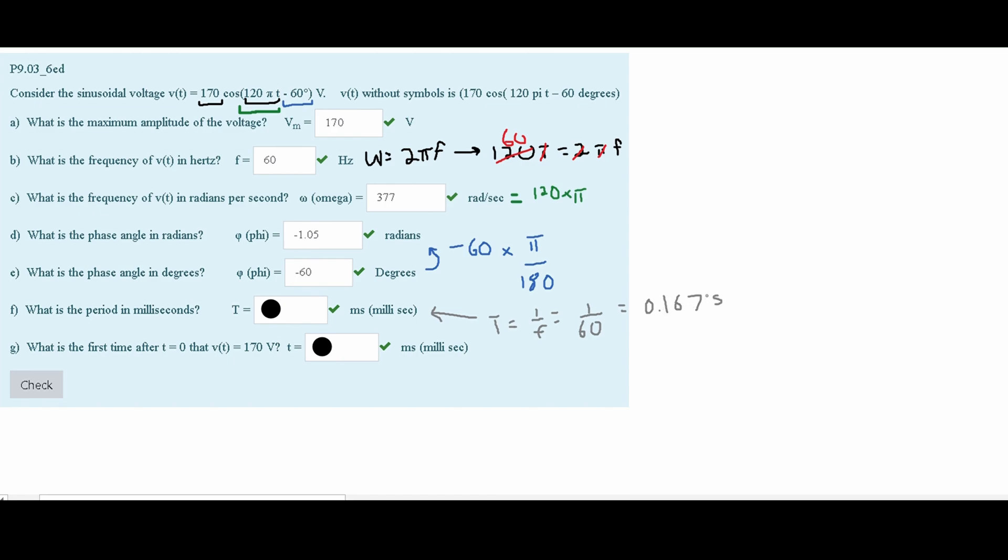This is going to give us approximately 0.167. Now, this is in seconds because time is measured in seconds. However, the question is asking for us in milliseconds. So we are going to multiply this by 1 milli over 10 to the negative 3. And this is going to give us approximately 17 milliseconds.